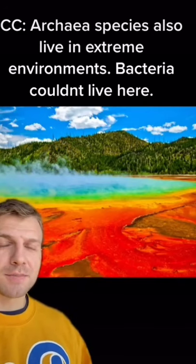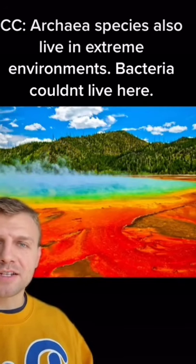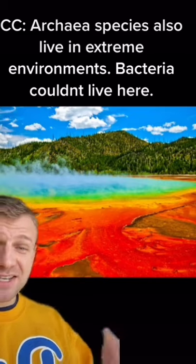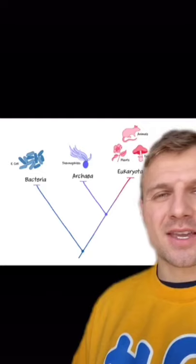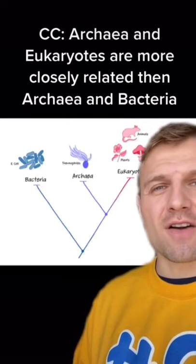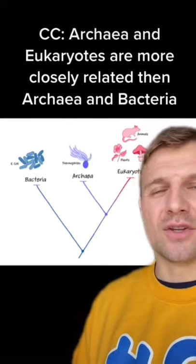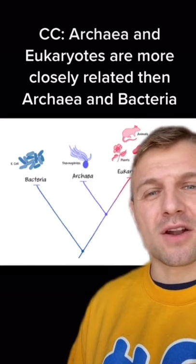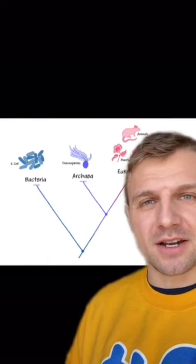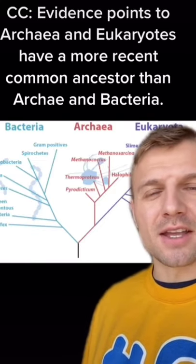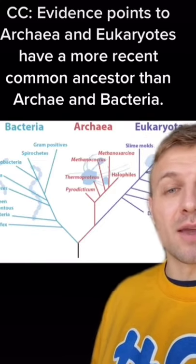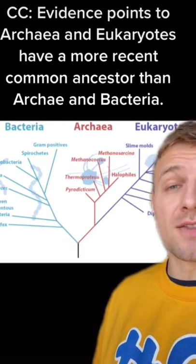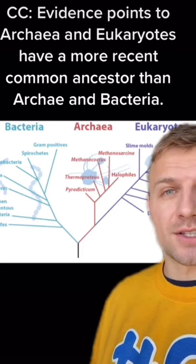Archaea species are also going to live in very hot and extreme environments where bacteria cells couldn't live. Interestingly enough, archaea and eukaryotes are more closely related than archaea and bacteria. Evidence points to archaea and eukaryotes having a more recent common ancestor than archaea and bacteria.